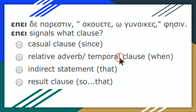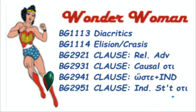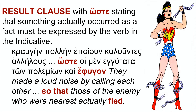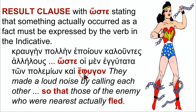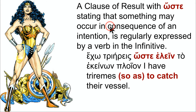So 'epei' meaning 'when' is a relative adverb or temporal clause. Let's talk about two other clauses we need: 'hoste' can signify a result clause or a complement clause — 'so that.' It can be signified by the indicative — at this level it's usually indicative, as in 'so that they were fleeing.' But it could also occur with the infinitive: 'I have ships so that I could catch their vessels.' So 'hoste' can occur with the infinitive as well.